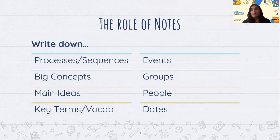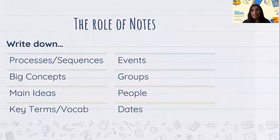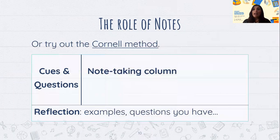So as I said, we were going to get back to what you need to be paying attention to in your notes: processes and sequences, big concepts, main ideas, key terms, vocabulary words, events, groups, people, and dates.